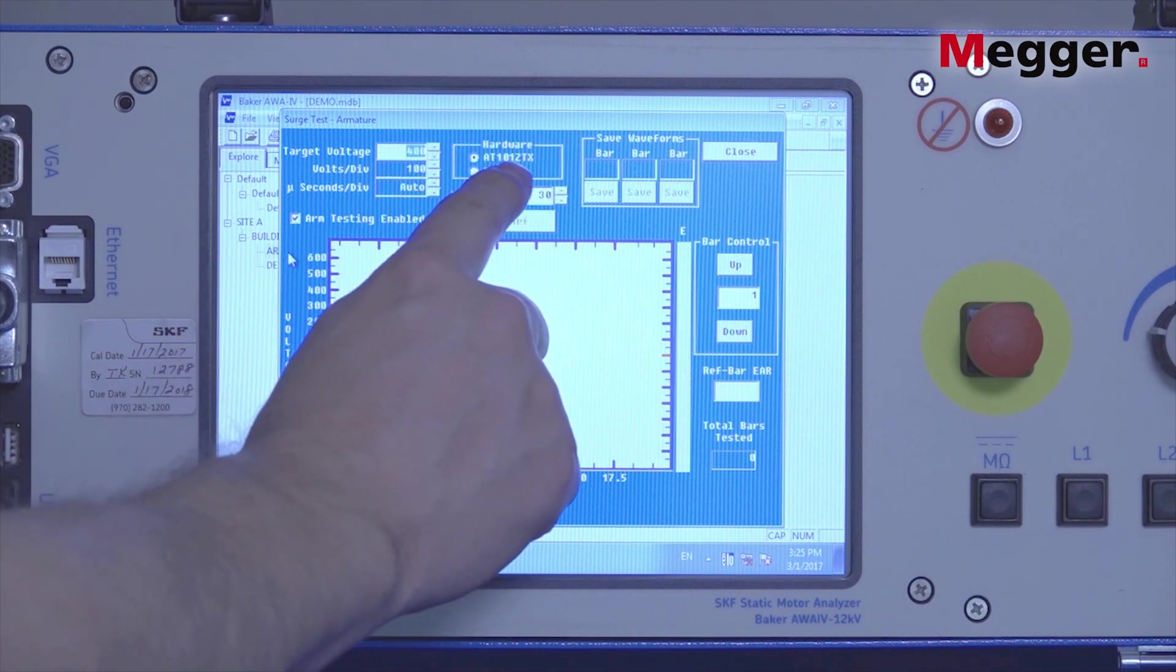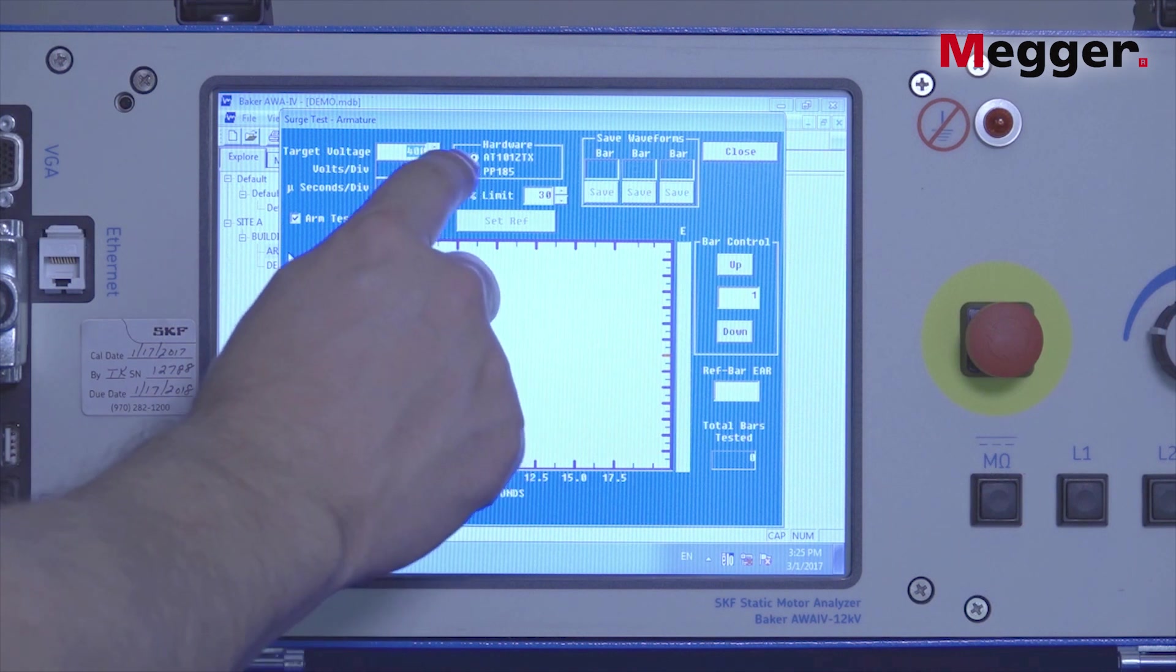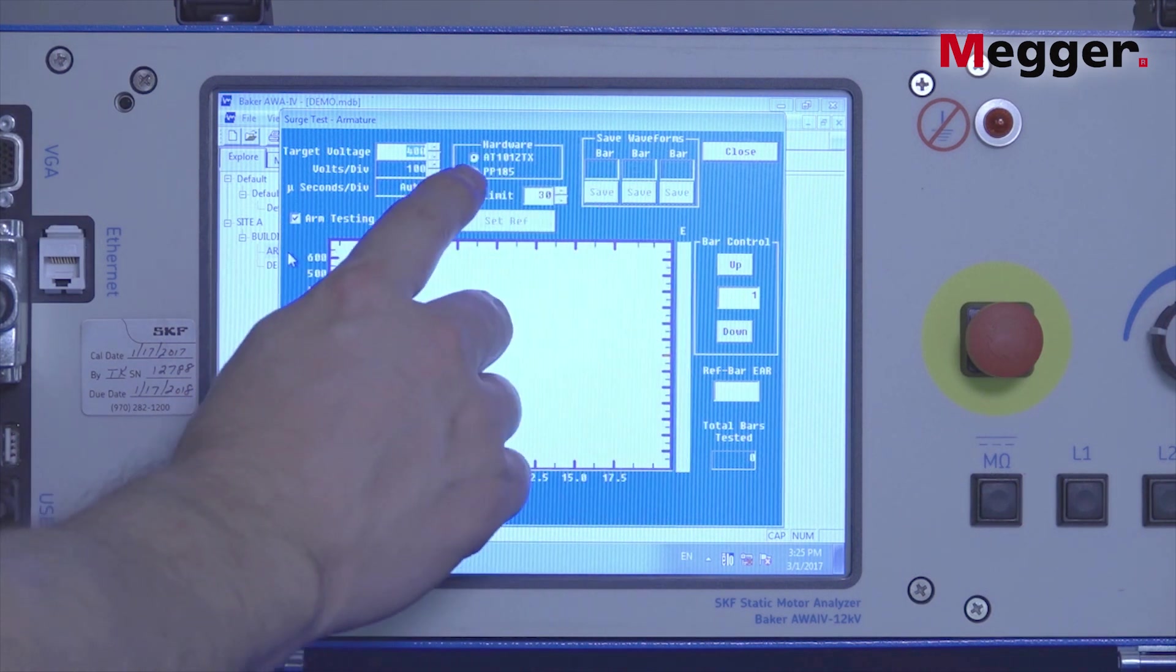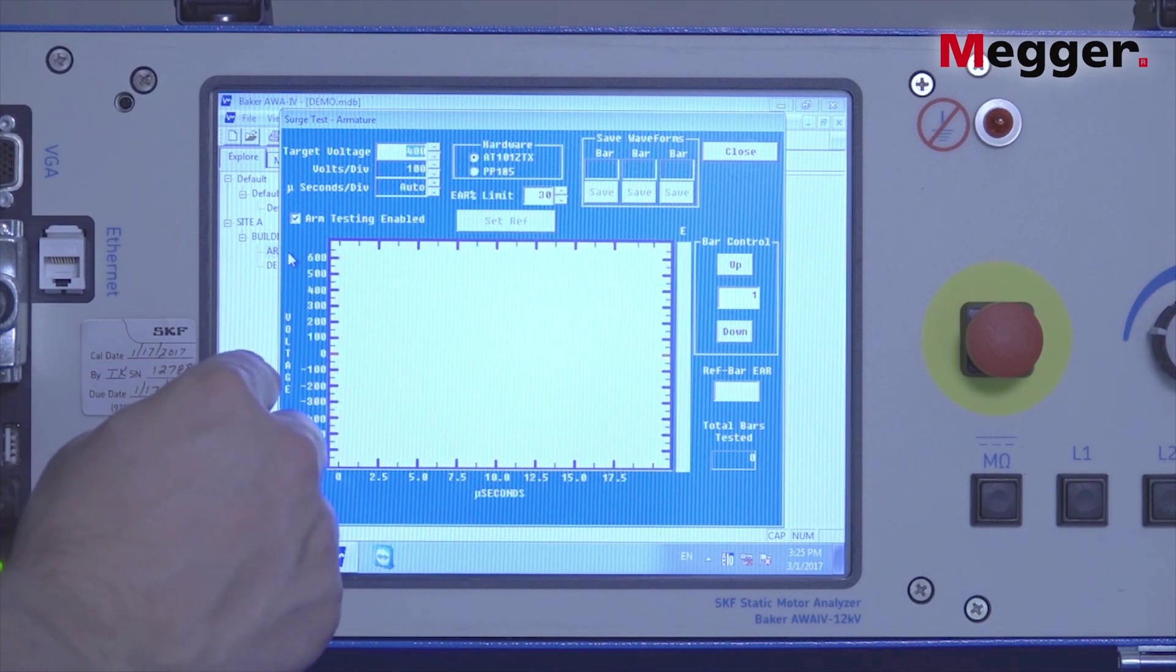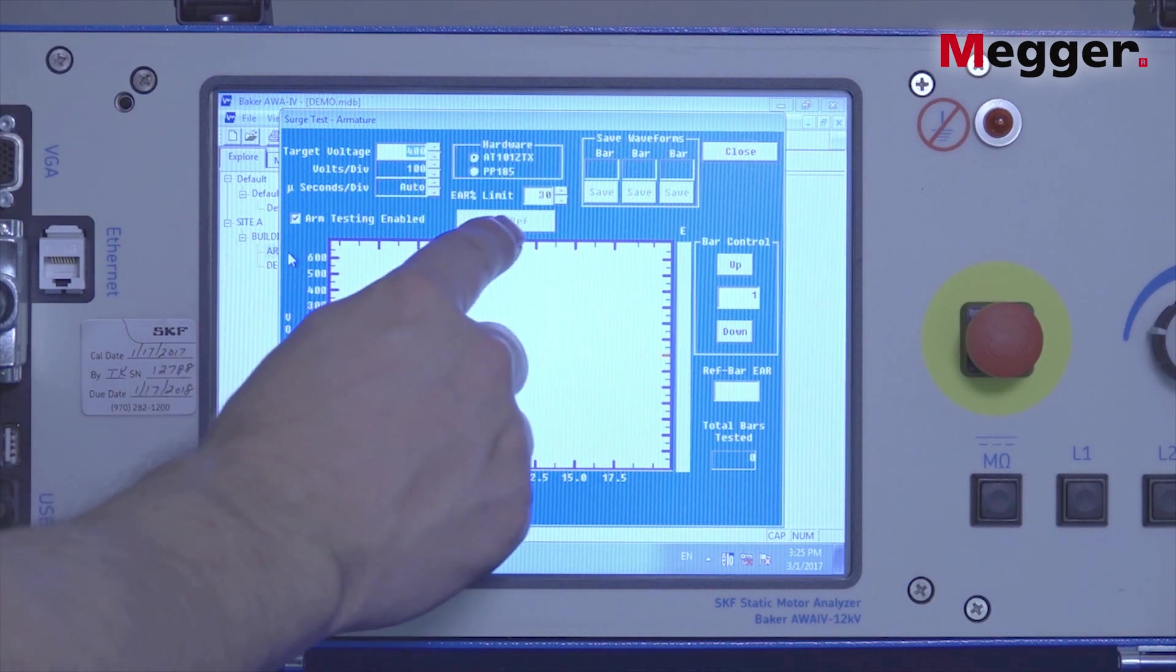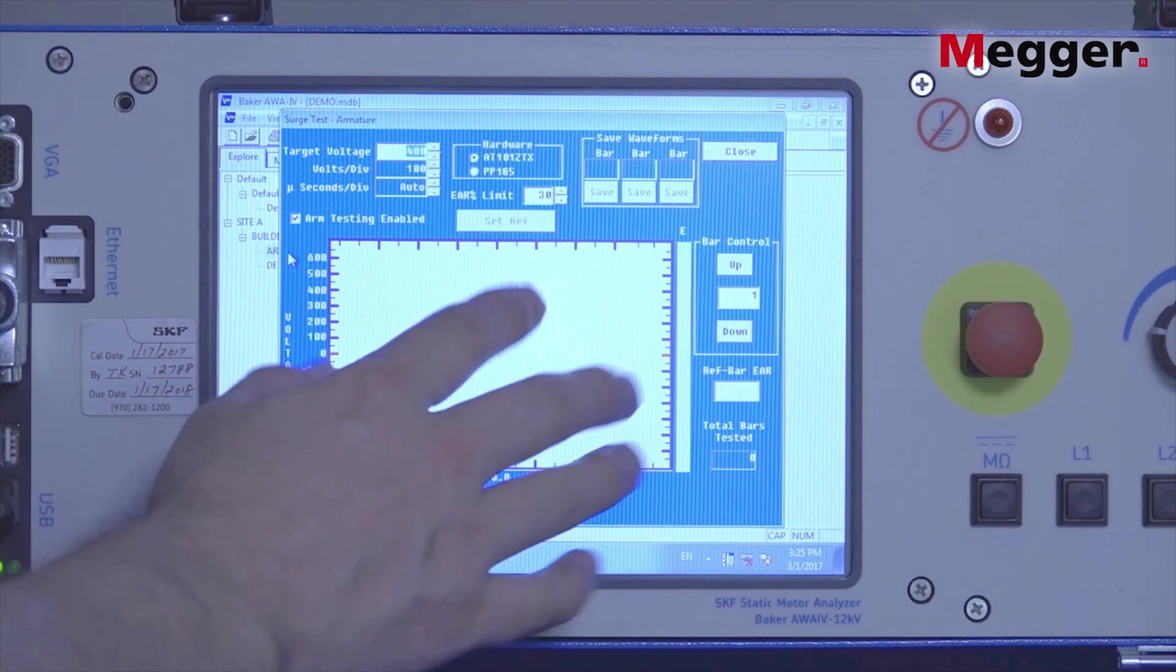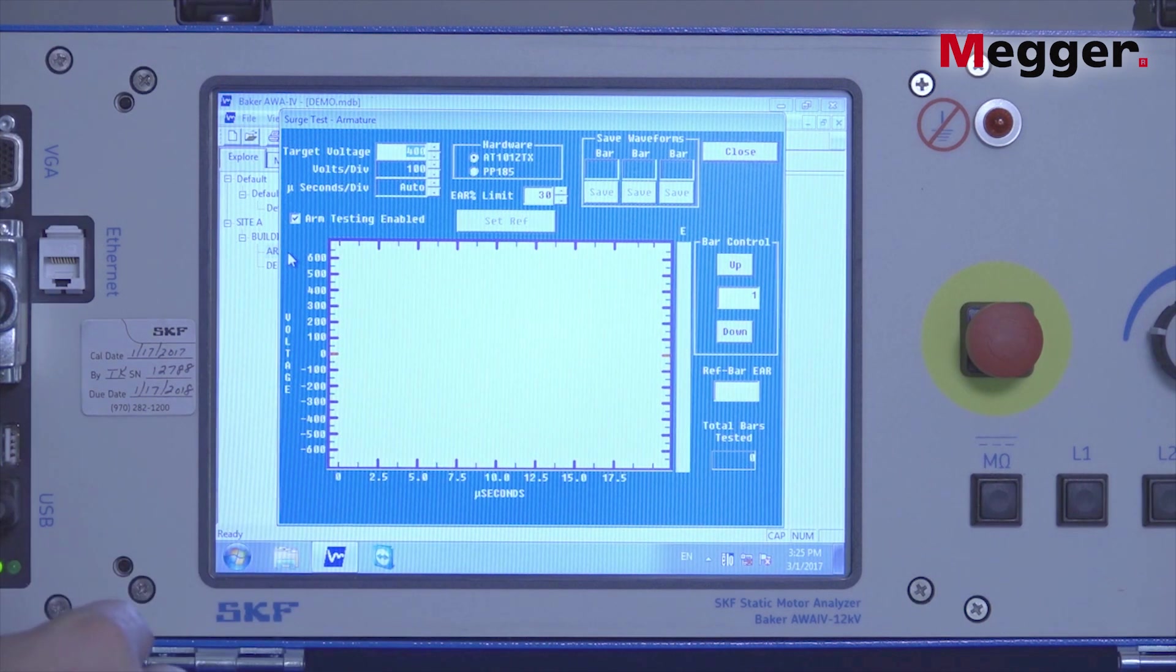Select the appropriate hardware. We're using a ZTX, so we'll select the AT101ZTX. If we were using a power pack that was capable of testing armatures, we'd select the power pack feature. Also set the EAR limit appropriately to indicate a failed test.